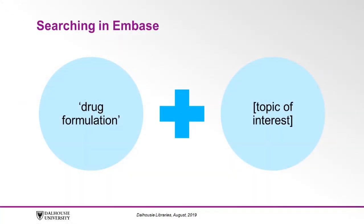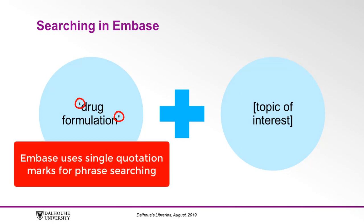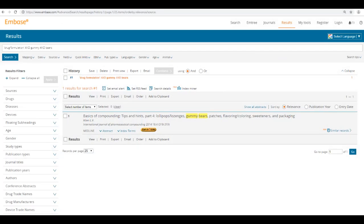For example, in Embase the search term drug formulation is used instead of drug compounding, so try pairing 'drug formulation' using quotations to search the term as a phrase with your topic of interest. Keep in mind that Embase uses single quotation marks for phrase searching, whereas CINAHL uses double quotation marks. Identifying an article's publication information will be similar to the steps outlined in CINAHL, but the information may be presented slightly differently.